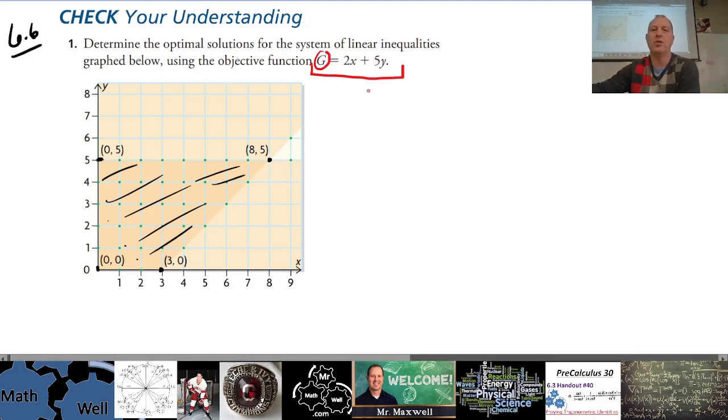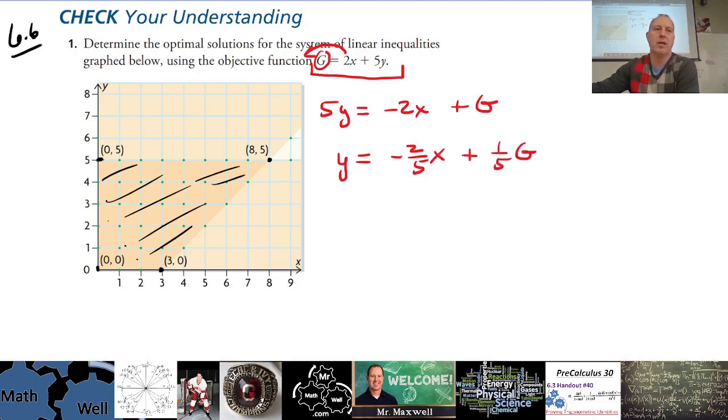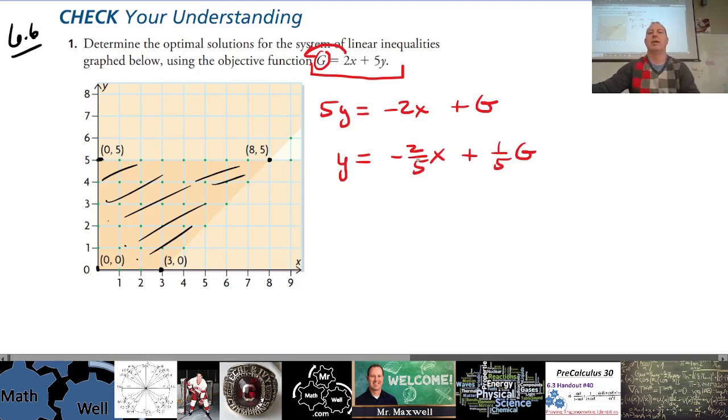What you want to do is rearrange this to y equals mx plus b. So if I take the 2x over there, then I get 5y equals negative 2x plus G, and then if I divide, it's y equals negative 2/5x plus 1/5G.